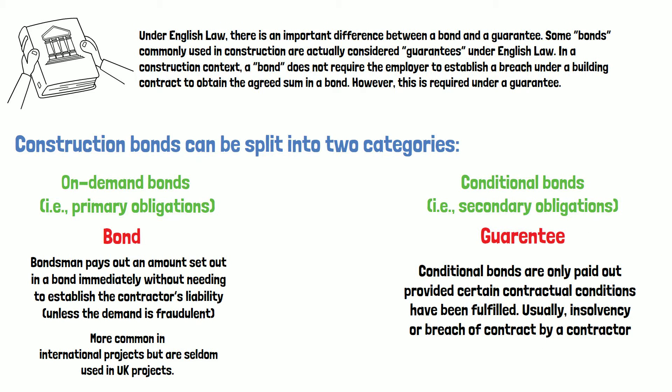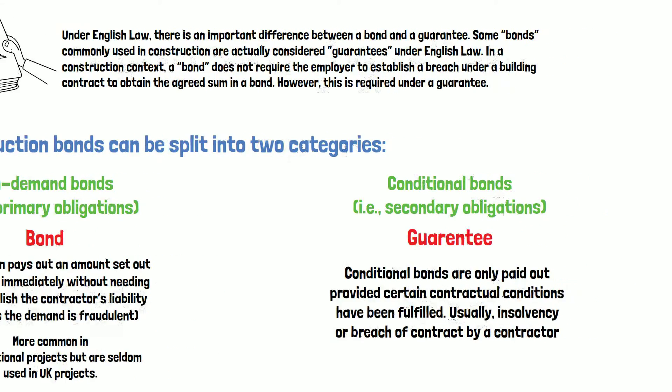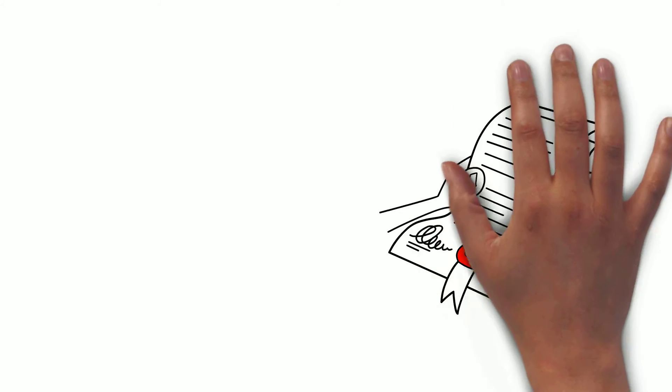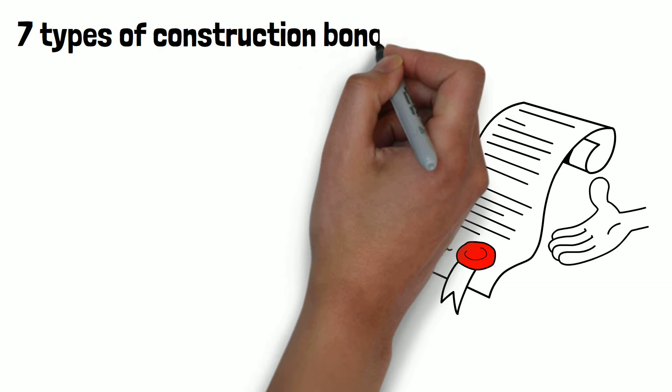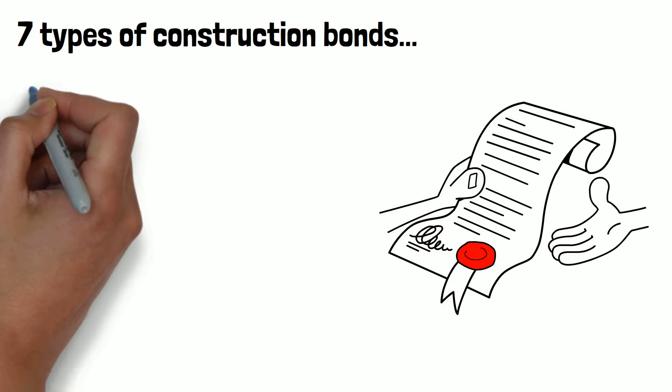However, for the purpose of this video and to keep in line with commonly used terminology, we will use both bond and guarantee synonymously. So what are the different types of bonds available? In this video we're going to look at seven different types of construction bonds.